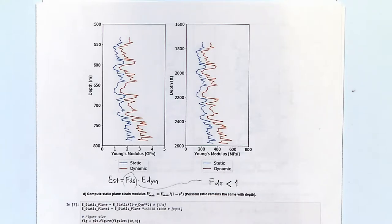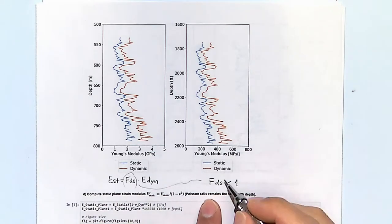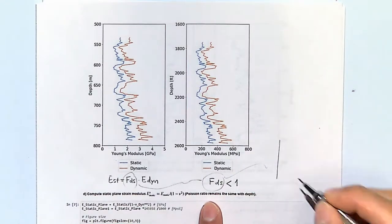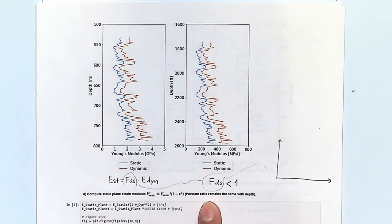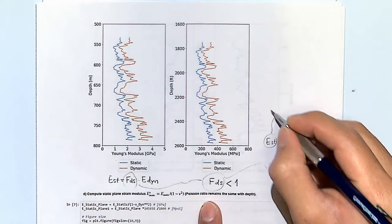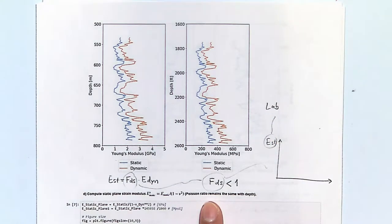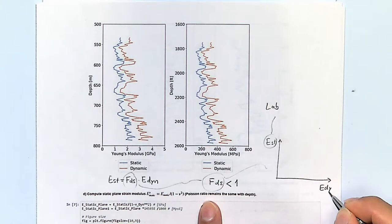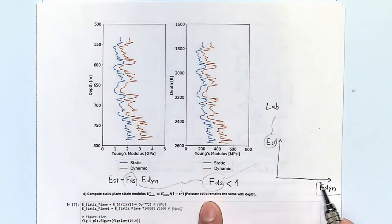When you do hydraulic fracturing or depletion, you deform the rock a lot more than a wave does. To get this conversion parameter, you measure the static modulus in the lab — usually with a triaxial cell, the same way you did in the lab — and on the other hand you measure the dynamic modulus from the log, and sometimes also in the lab.